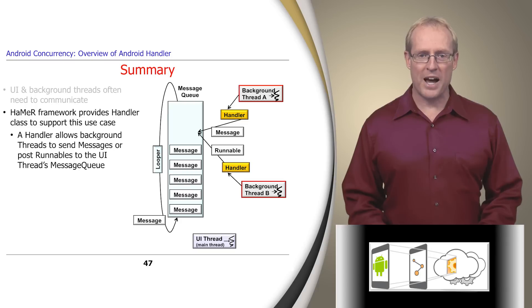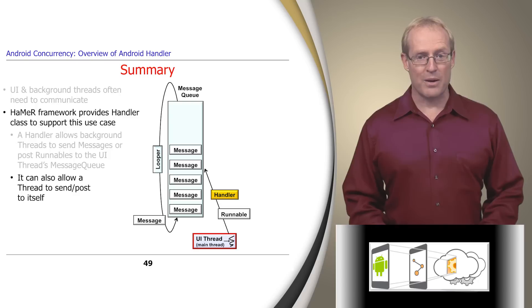The Handler framework uses the handler class to support these interactions. A handler allows one or more background threads to send messages or post runnables to the user interface thread's message queue, as well as allow a thread to send messages or post runnables to itself.